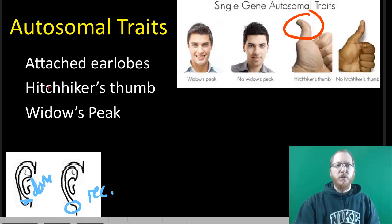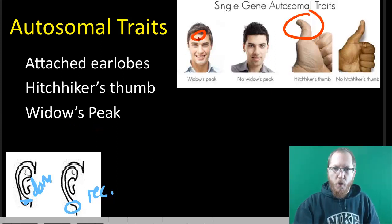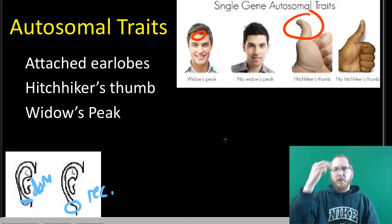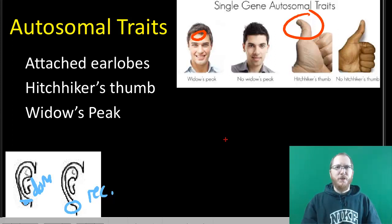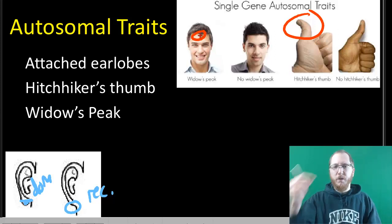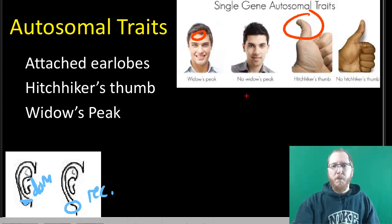The last autosomal trait is widow's peak, which is dominant. A widow's peak is where your hairline has a little part that comes forward, making more of a triangle shape. For some people this can be difficult because you can't always tell if it's a big widow's peak or a receding hairline. For most people, assuming they have all their hair, you just look for a little point that sticks down toward the middle of the forehead. If the hairline goes straight across, that's the recessive trait.